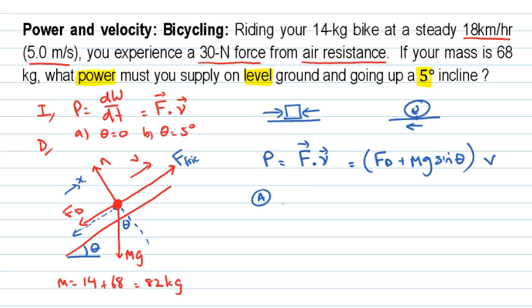In the case of A, where theta is equal to zero, then the friction force just has to balance the drag force because the component of weight that goes down the slope is zero, because the sine of zero is zero. So that becomes power, because it becomes equal to the drag force multiplied by the velocity, and that's going to be equal to 30 newtons multiplied by 5 meters per second, which is 150 joules per second, which is watts.